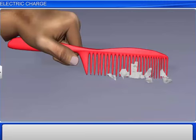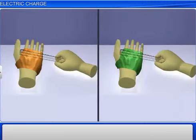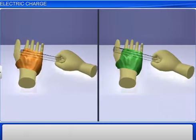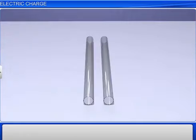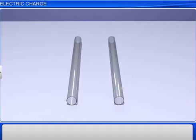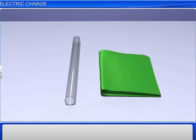When two pieces of silk cloth are rubbed against two glass rods individually, and the glass rods are kept beside each other, the glass rods repel each other. Now, if one of the silk cloths and a glass rod are kept beside each other, they attract each other.